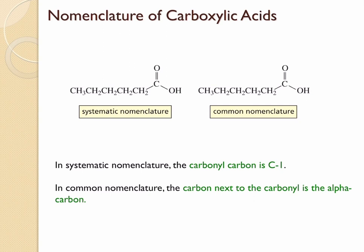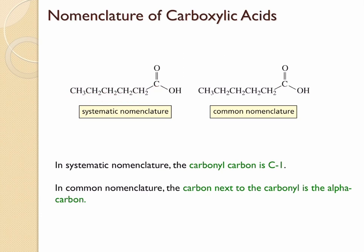When you have substitution across any of these carbons then we have to give the numbering. In the case of systematic nomenclature, this carbon at the carboxylic acid is going to be number one, and you start numbering from right to left. But in the case of common nomenclature, we are going to use alpha, beta, gamma. So the carbon next to the carboxylic acid functional group is the alpha carbon, followed by beta, gamma, delta, and epsilon and so on.